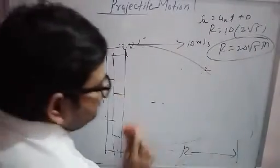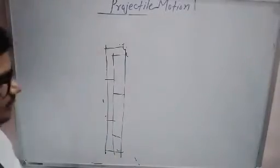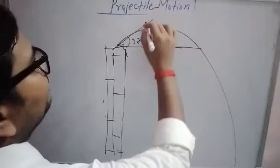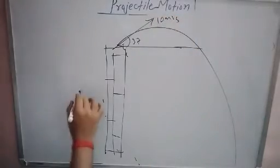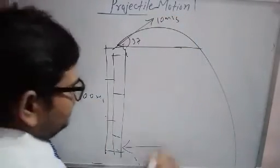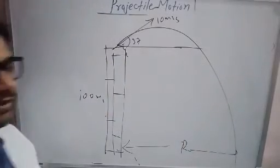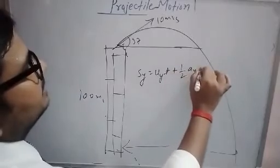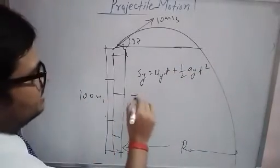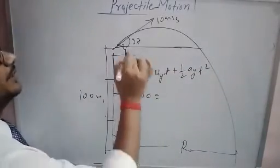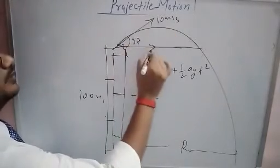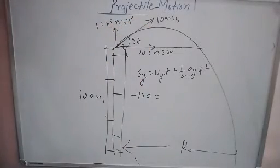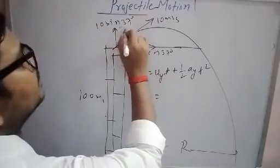If you throw an object from the tower at an angle of 37 degrees above the horizontal with a speed of 10 m/s, you need to find the range and time taken by the projectile to reach the ground. Using s_y = u_y·t + ½·a_y·t²: s_y = −100 m (downward), the x-component is 10 cos 37° = 8 m/s, and the y-component is 10 sin 37° = 10 × (3/5) = 6 m/s upward.